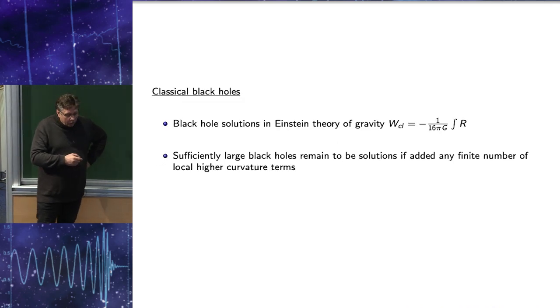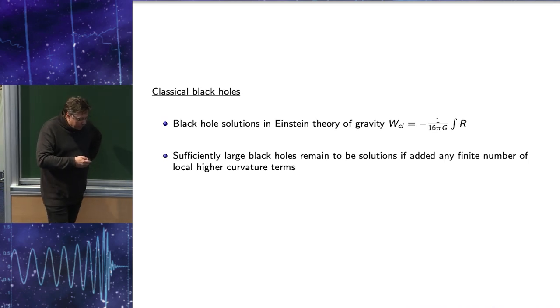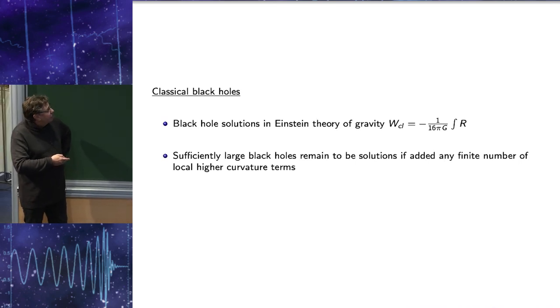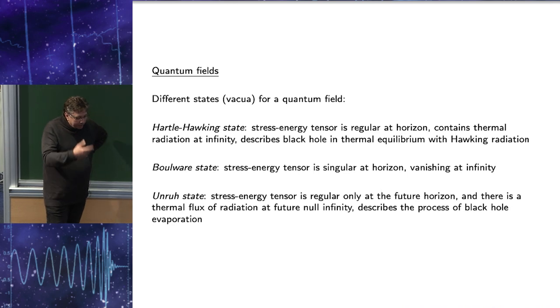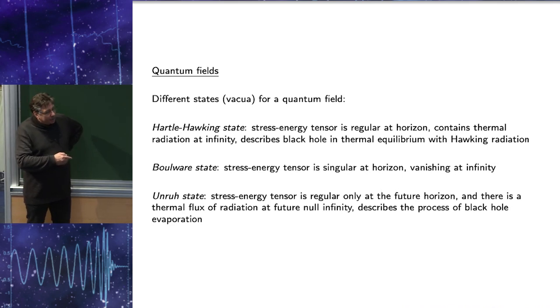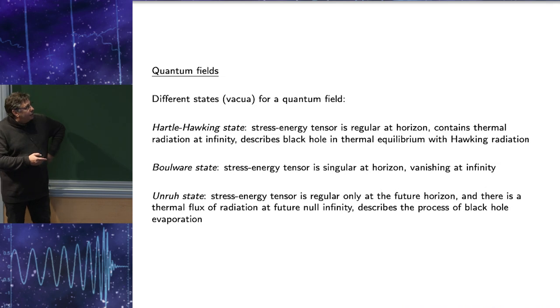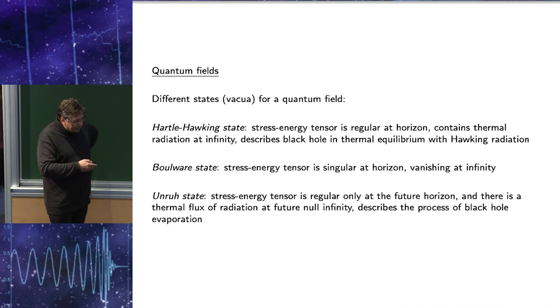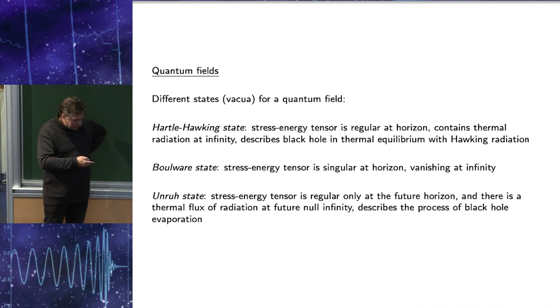Speaking about classical black holes, which are subject also of this workshop, they are typical solutions which appear in local theory of gravity. Speaking about quantum theory, the first step would be quantize matter fields on the background of this classical black hole. And then what appears immediately is that there is certain freedom when we do it, freedom which is usually phrased as we can choose different quantum states.